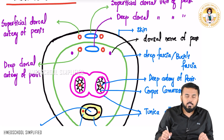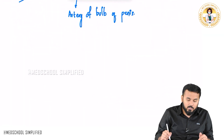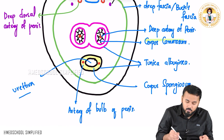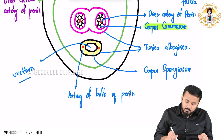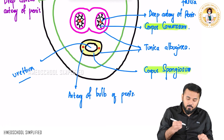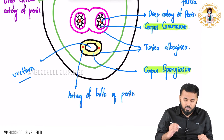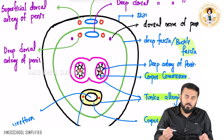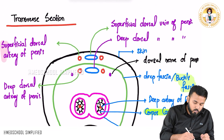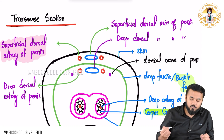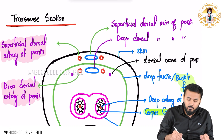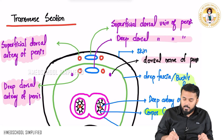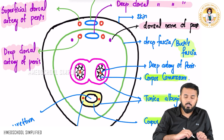So what are the structures we have just discussed? We have discussed a few important structures on the transverse section. We discussed corpus cavernosum and corpus spongiosum, which are surrounded by tunica albuginea. We have the deep fascia, also called Buck's fascia. We have the superficial dorsal artery and deep dorsal artery of the penis, the superficial dorsal vein and deep dorsal vein of the penis, and the dorsal nerve of the penis. These are the structures located on the transverse section.